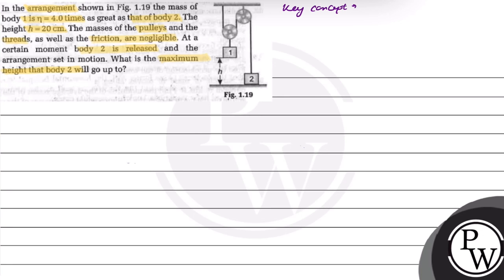In this question, the key concept is pulley relations and conservation of energy. In this case, since mass of box 1 is greater than mass of box 2 by 4 times, box 1 will go down and box 2 will go up.